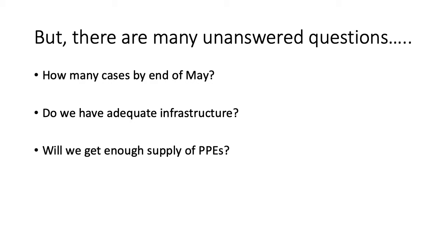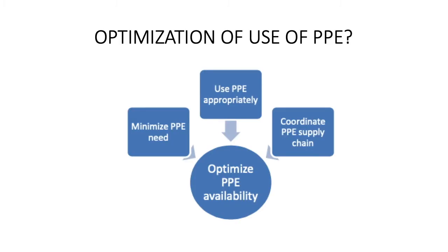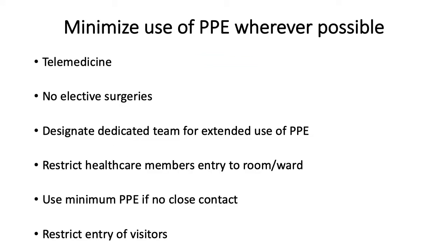There are many unanswered questions. We don't know how many cases there will be by end of May — a collector from Ahmedabad noted that if cases double every four days, there could be 8 lakh cases in Ahmedabad alone by month's end. Will there be adequate infrastructure and PPE supply? According to WHO guidelines, we need to minimize use, use PPE appropriately, and coordinate the PPE supply chain. Telemedicine is advocated for mild or asymptomatic patients — keep them at home and maintain daily telephonic or video contact.